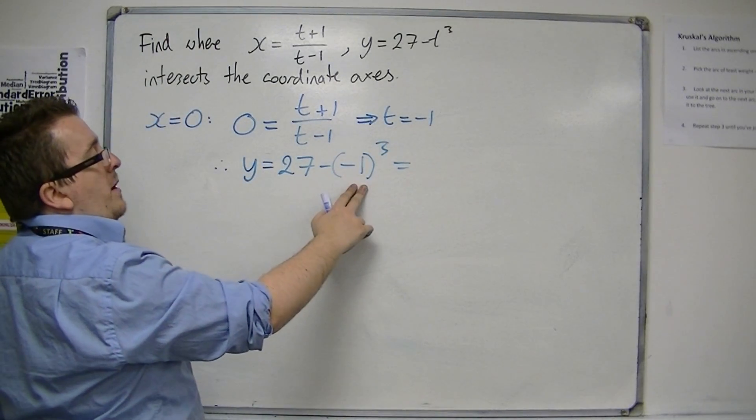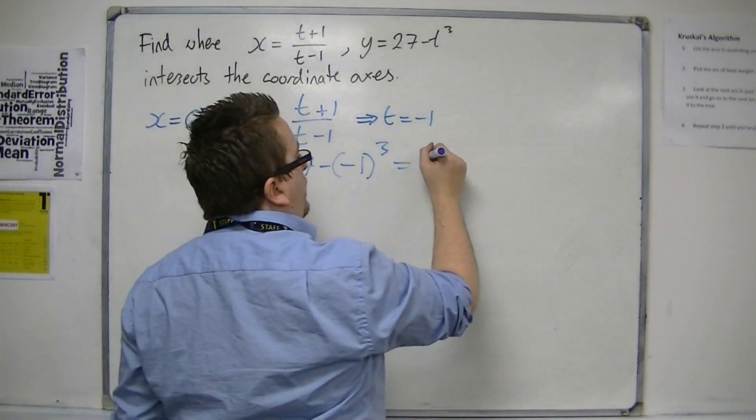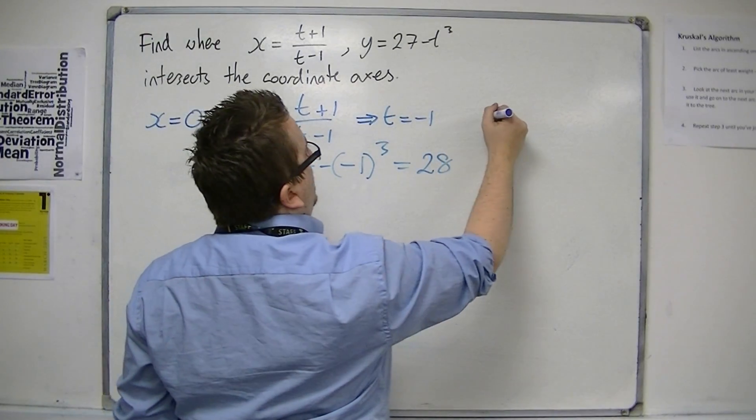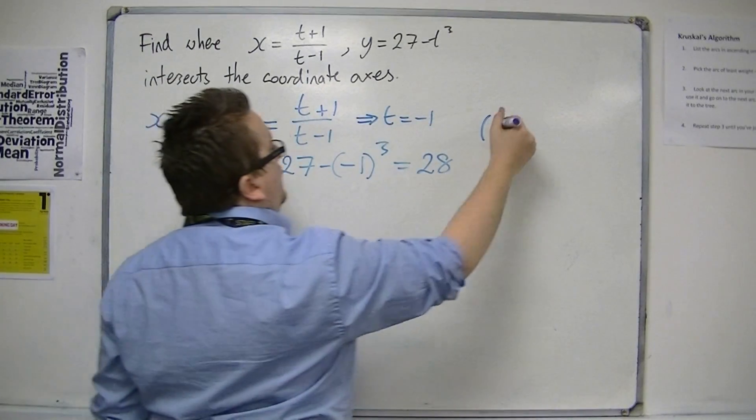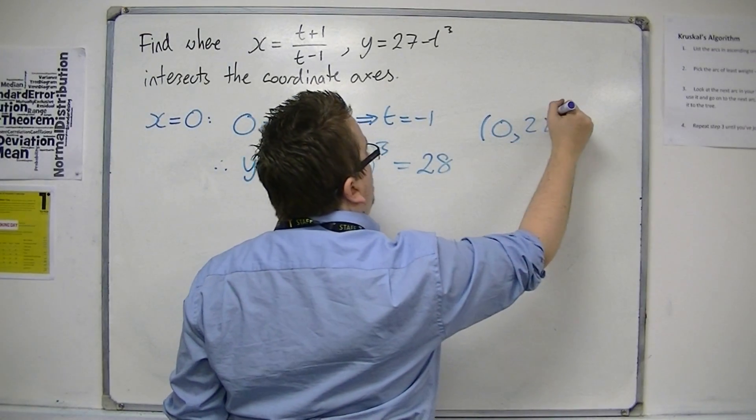Minus 1 cubed is minus 1, so 27 take away minus 1 is 28. So it crosses the y axis at 0, 28.